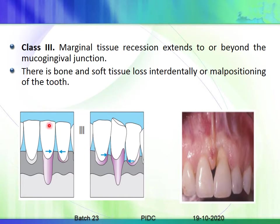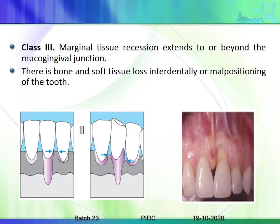Class 3: the marginal tissue recession has gone to or beyond the mucogingival junction, but there is a loss of soft tissue and bone interdentally, or there could be malpositioning — slight crowding of the tooth. Clinically you can see a defect where a small amount of soft tissue has been lost interdentally, with recession that has gone beyond the mucogingival junction.